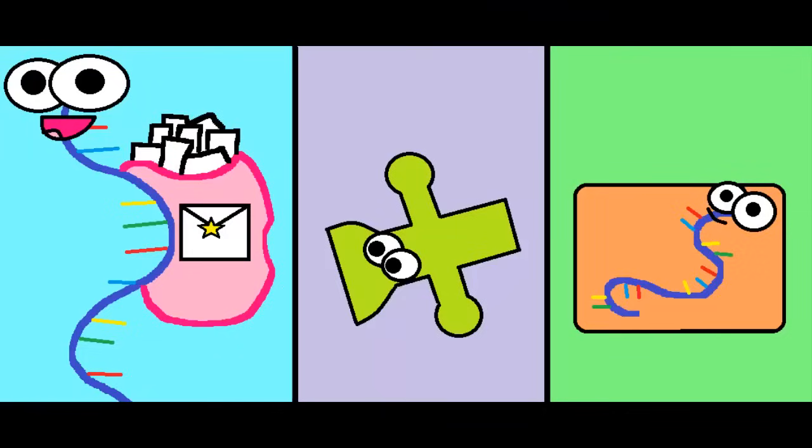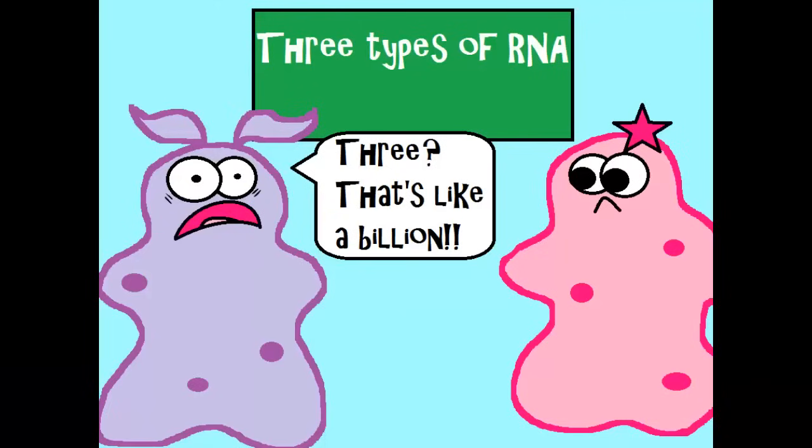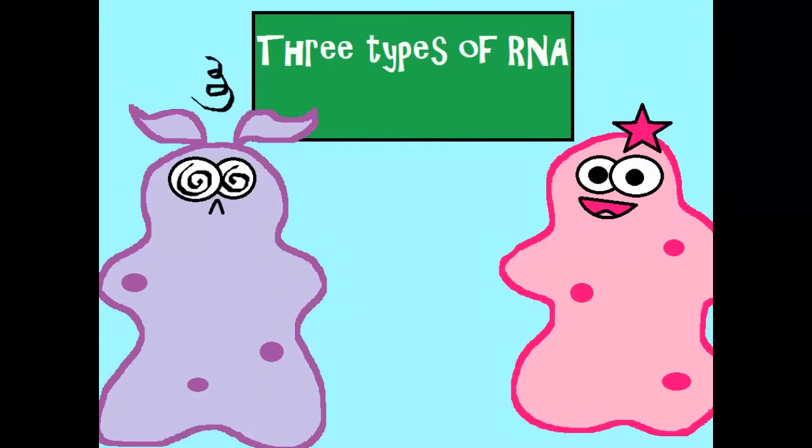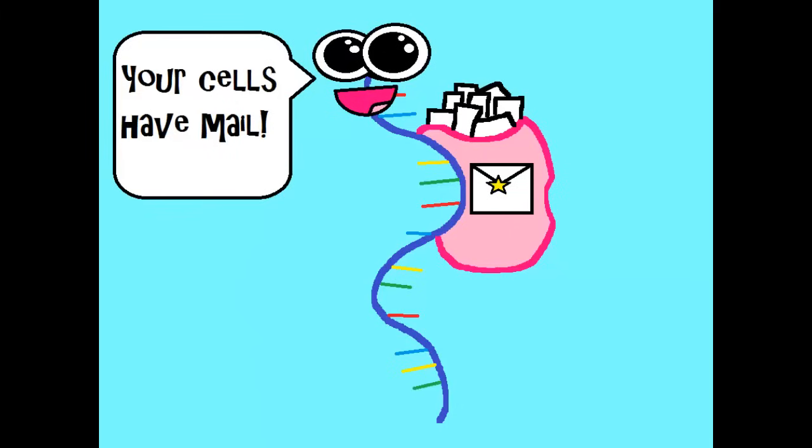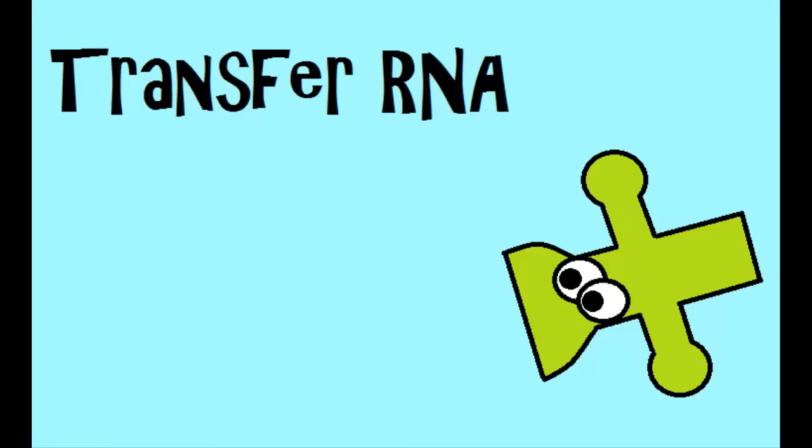There are actually three types of RNA. But don't worry, because what they stand for really helps give away what they do. Let me give you an example. So the first type of RNA is messenger RNA. And the actual acronym that you'll see for it is mRNA, messenger RNA. And its job is to carry a message based off of the DNA.